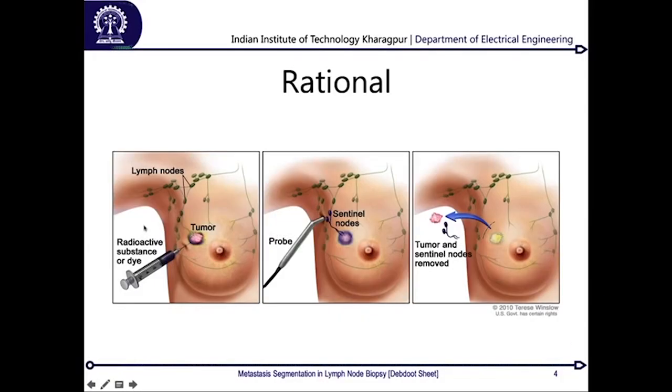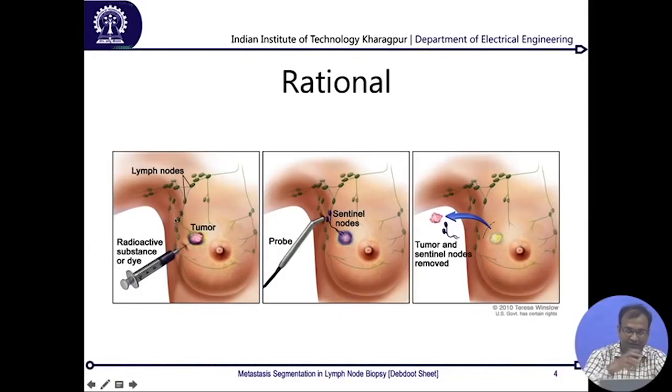Whenever you hear about the problem called multiple organ failures due to cancer metastasis, that basically means that these cancerous cells were spreading down to multiple organs within the body, and each organ kept on becoming unhealthy and cancerous and kept on failing, which means stopping their normal course of actions.